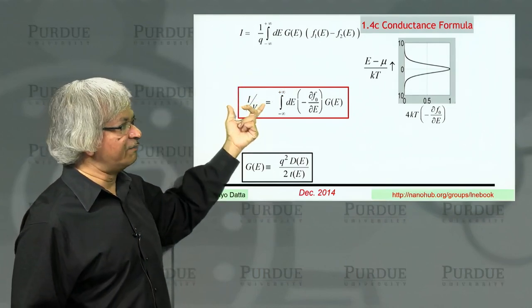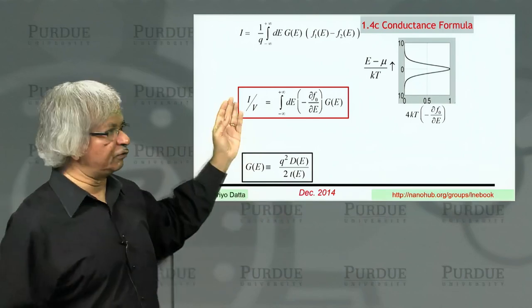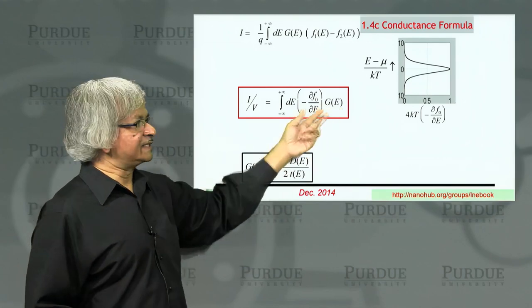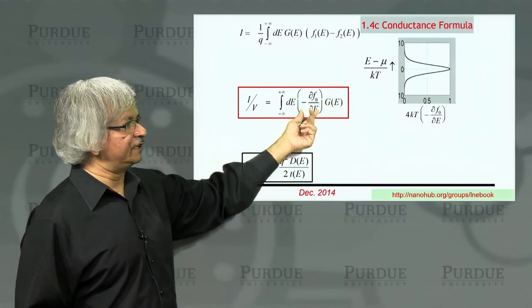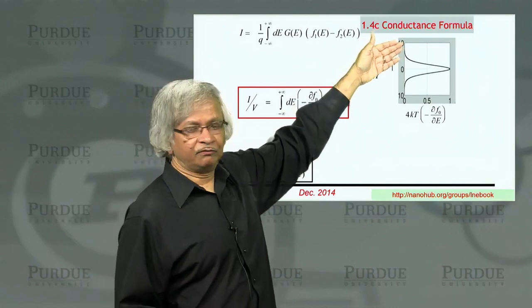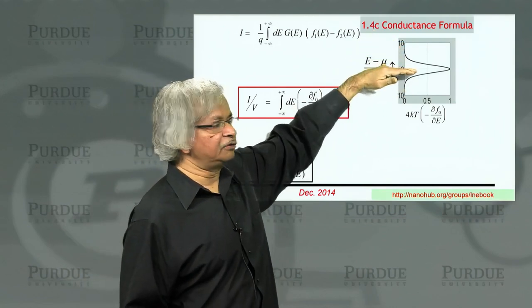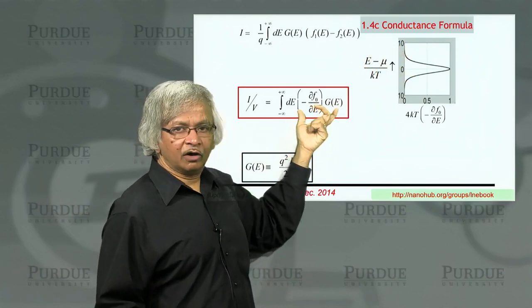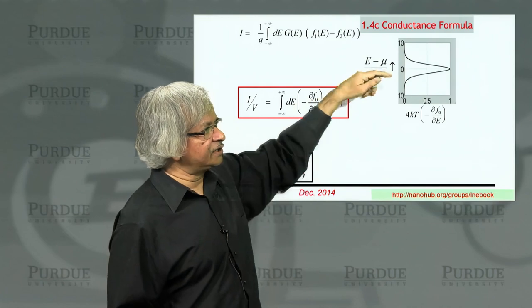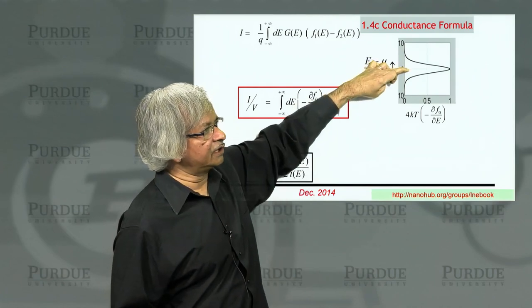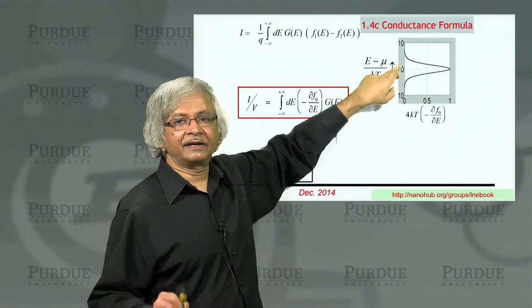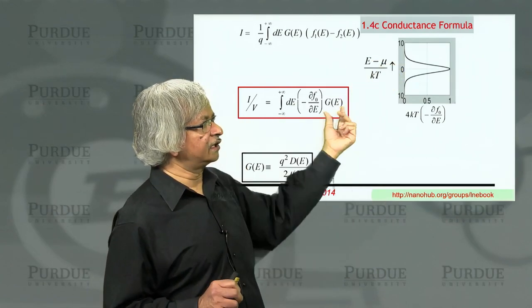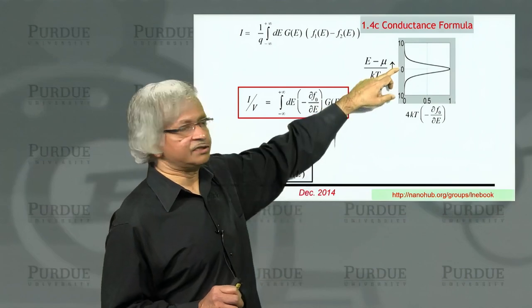And what it tells you is that the measured conductance, this current over voltage, is like an average of this conductance function, in the sense that you multiply it by del F del E, this quantity which I had shown before, which has a peak right around E equal to mu, and then dies out. So when you find the observed conductance, it is largely determined by the value of the conductance at E equal to mu. In fact, at zero temperature, it is essentially just this conductance at that energy, whatever that is.